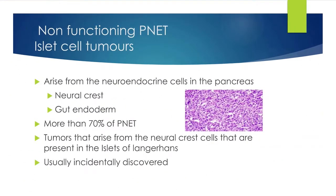There are two theories about where they come from in the pancreas. The older theory is that they arise from the neural crest, similar to the sympathetic and parasympathetic nerve ganglia, the adrenal gland, the medullary cells of the thyroid gland, the pituitary, and the parathyroid. However, recent evidence suggests they actually arise from the gut endoderm, which makes sense because the endoderm of the gastrointestinal tract produces cells that can function and produce hormones.